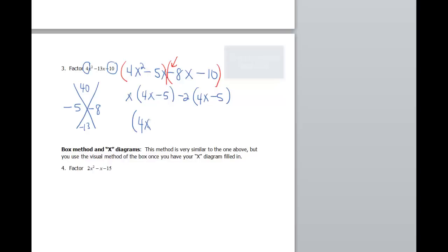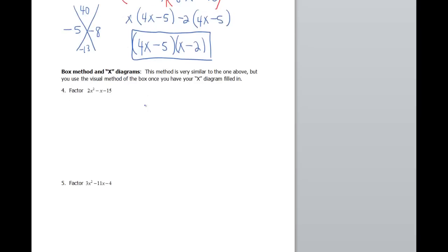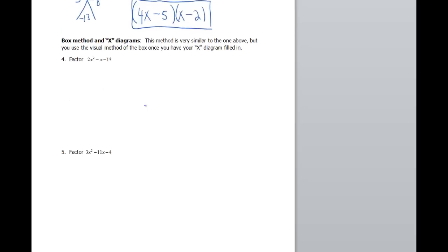I have a 4x minus 5 left there. I see a 4x minus 5 in both of them. When I factor that out, that leaves me with an x minus 2. These trinomials, even though they're ugly, you can factor them. It is possible to factor them most of the time anyway. There are some that are not factorable, of course.